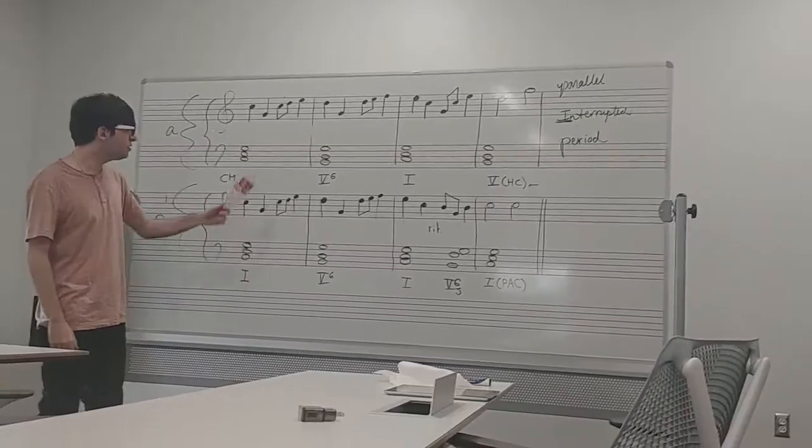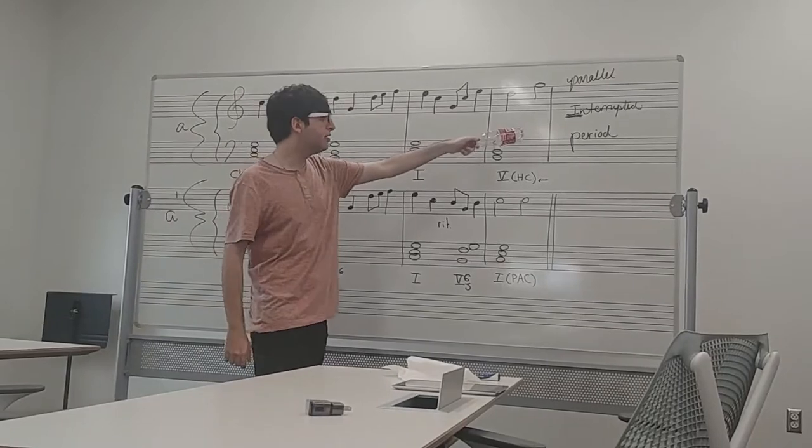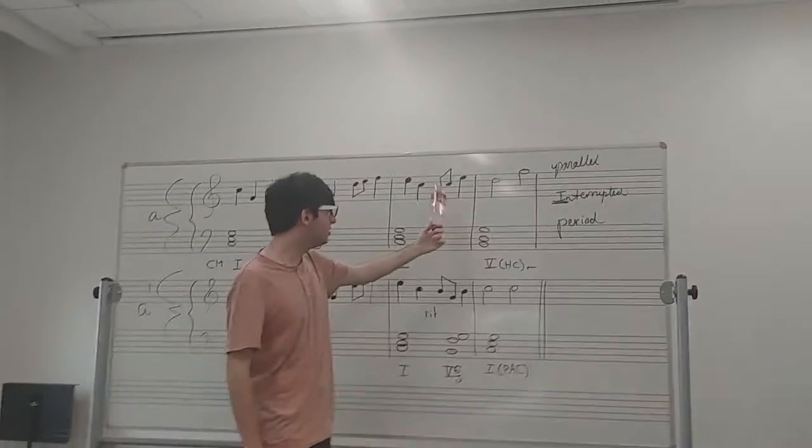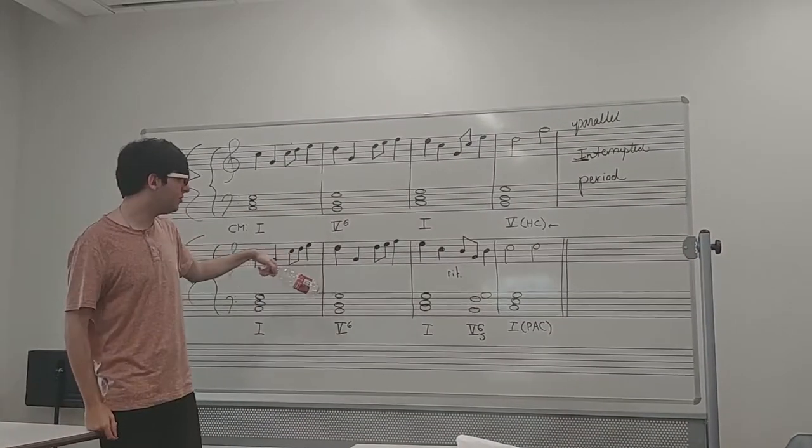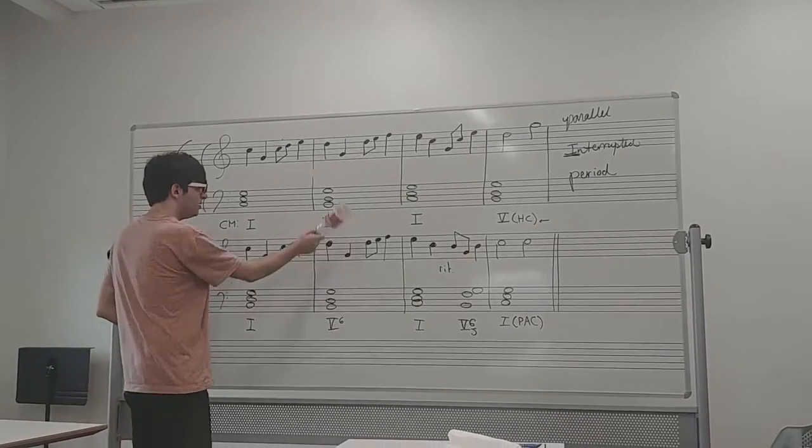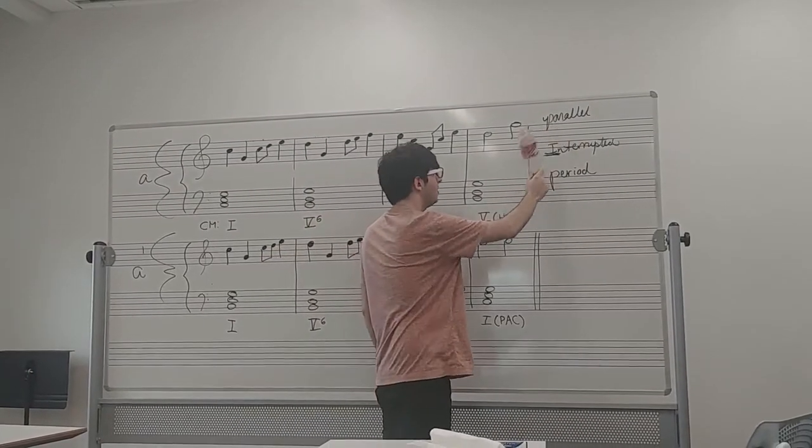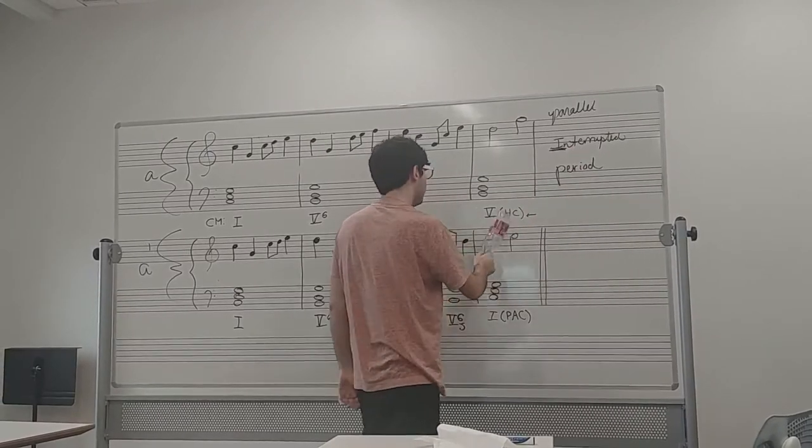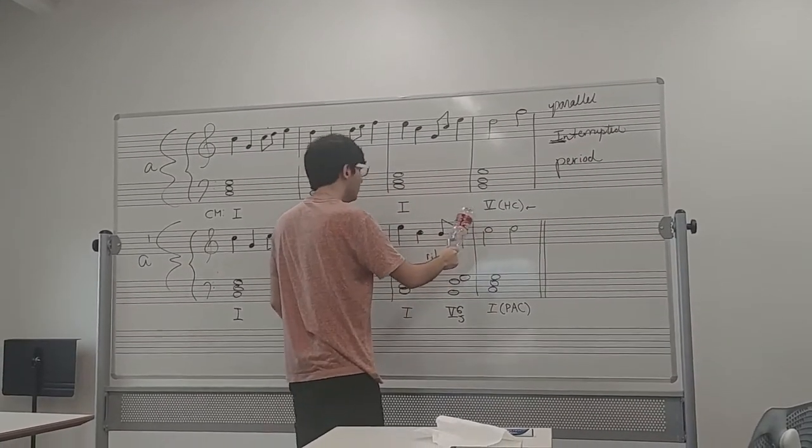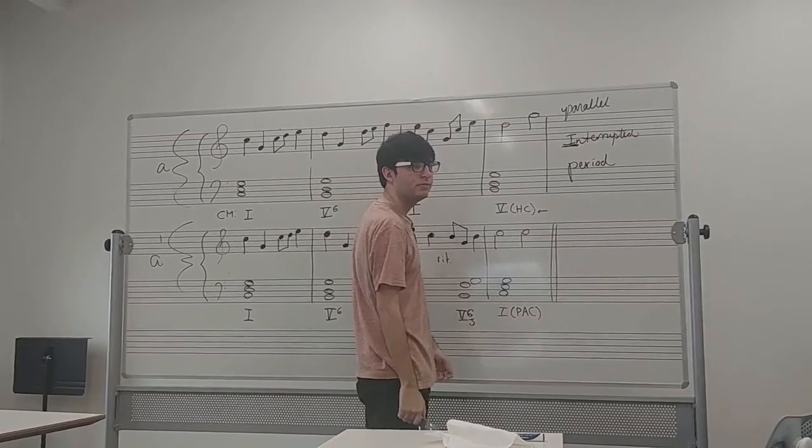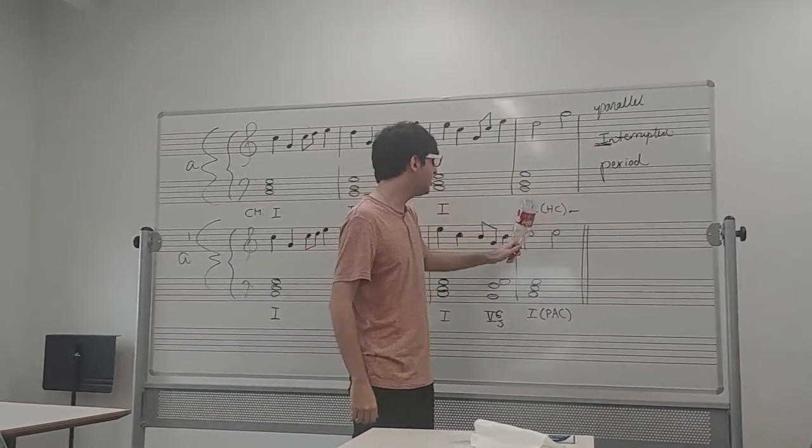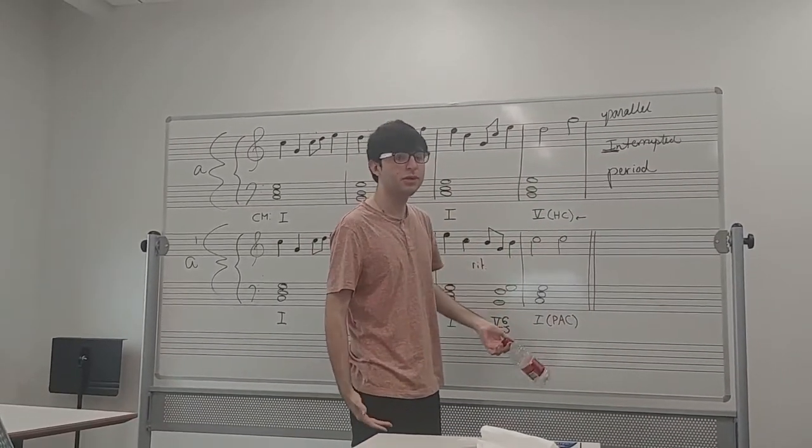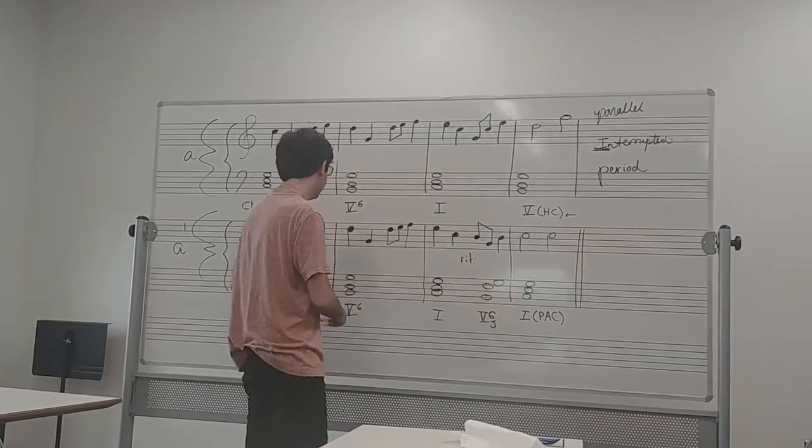No! The eight measures, this would be the antecedent, because it antecedents the second one, and this is the one that comes after. So this is like a response to this one. It is parallel because they're both similar. It is interrupted because the first phrase ends on a half cadence. Oh sorry. Interrupted because it ends on a half cadence, just like I was earlier.